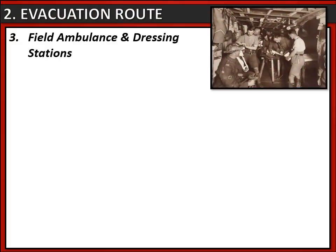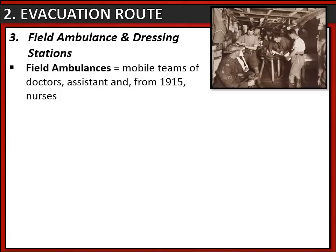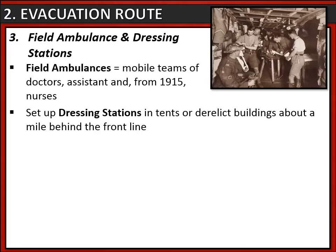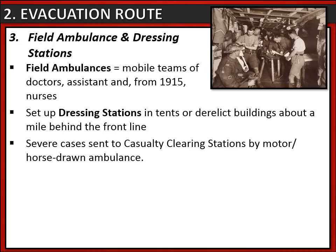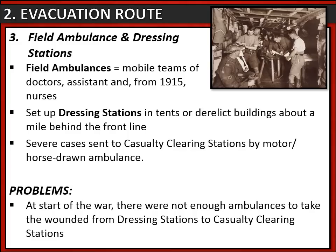Another part of the evacuation route was the field ambulance and dressing station. This would have been run by the Royal Army Medical Corps. Field ambulances were actually mobile teams of medical professionals such as doctors and assistants, and from 1915 nurses were also involved. They would be brought in just before a battle to set up dressing stations, which would be set up in tents or derelict buildings about a mile behind the front line where it was a little bit safer. They would mainly treat wounded soldiers by dressing their wounds, hence the name dressing stations, and then send on more severe cases to casualty clearing stations by motor or horse-drawn ambulance. One key problem was that at the start of the war there just weren't enough ambulances, meaning there were major delays for treatment which could cost lives.